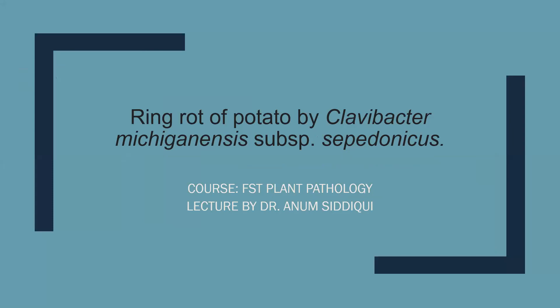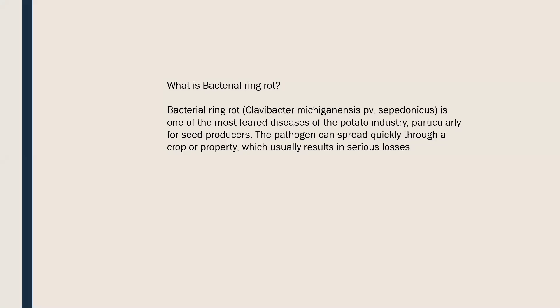Welcome to the online class. In the previous lectures of plant ecology, we studied about the disease caused by Senja. In this lecture we will cover the disease named as ring rot of potato, which is caused by Clavibacter michiganensis subspecies sepedonicus. The bacterial ring rot causing agent is Clavibacter michiganensis pathovar sepedonicus. It is one of the most serious diseases of potato, particularly for seed producers.